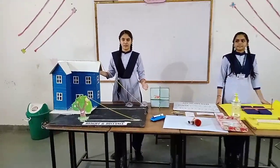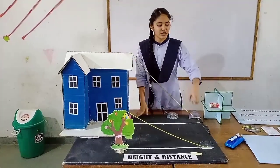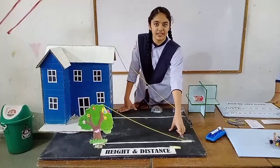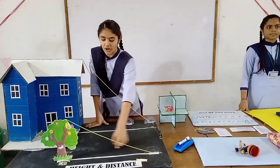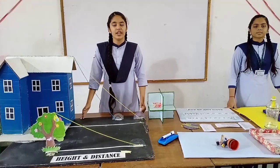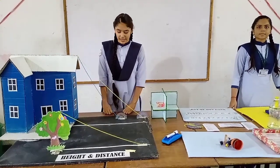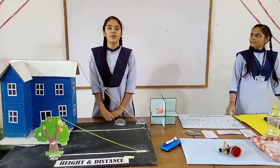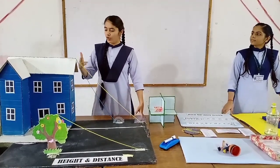The first model is height and distance. We have made a model using angles of elevation. There are two triangles: the first triangle has the angle beta, and the second triangle has the angle alpha. We have one formula which is: height is equal to 1 upon tan(alpha) minus tan(beta). We put both values in to find the perpendicular height.